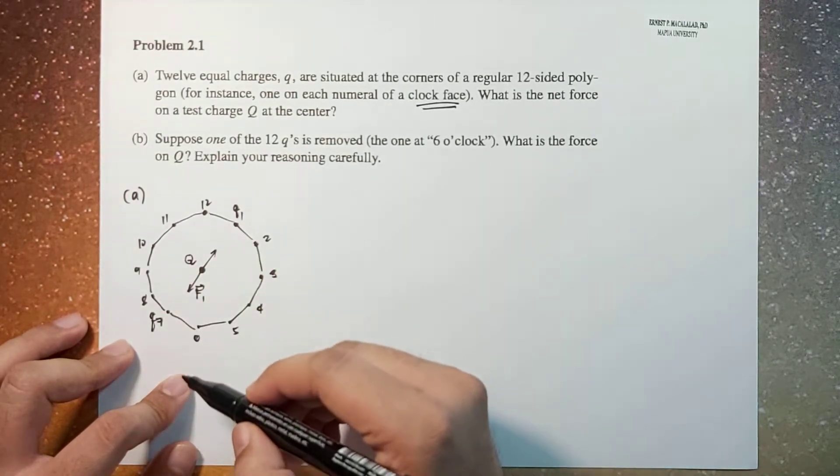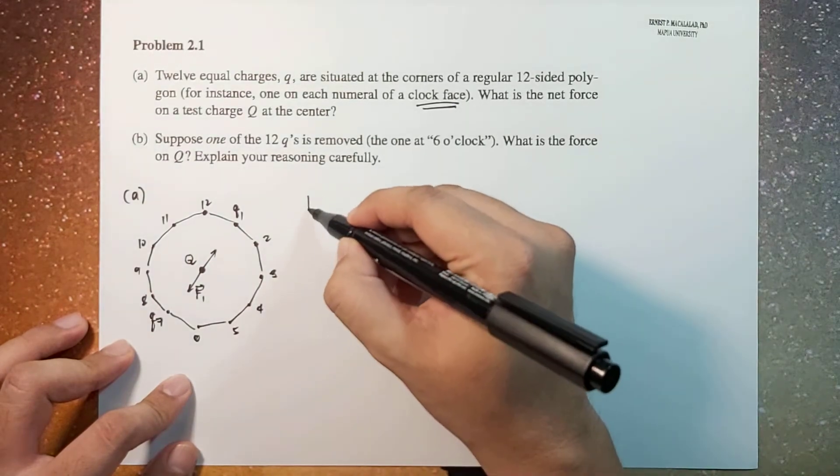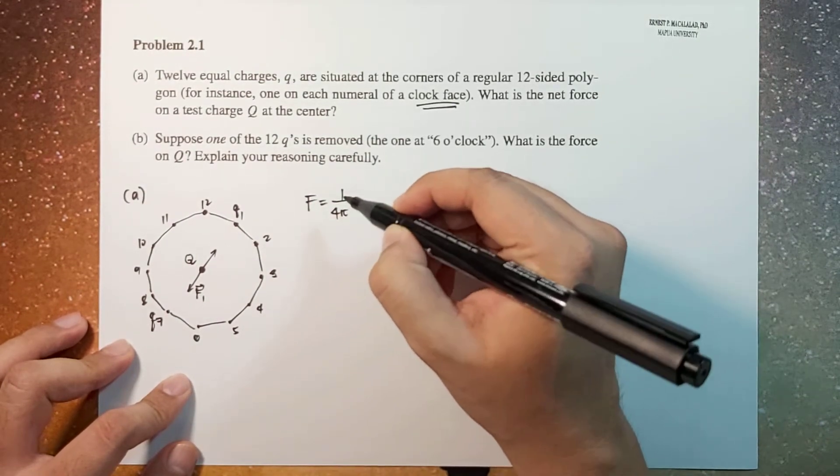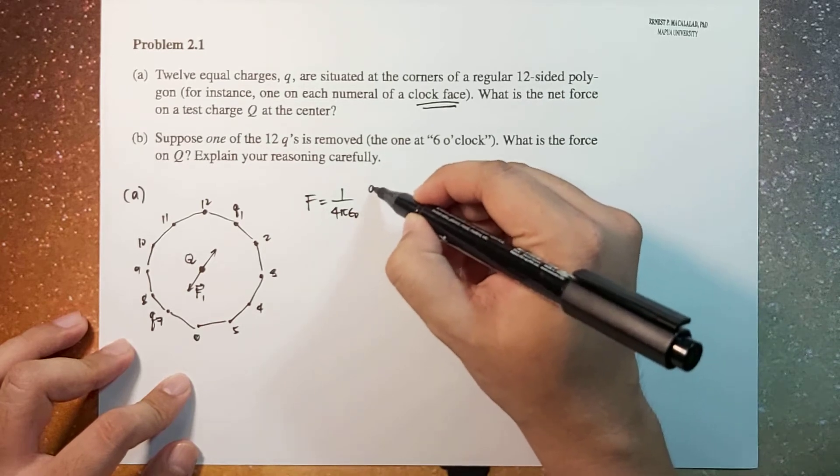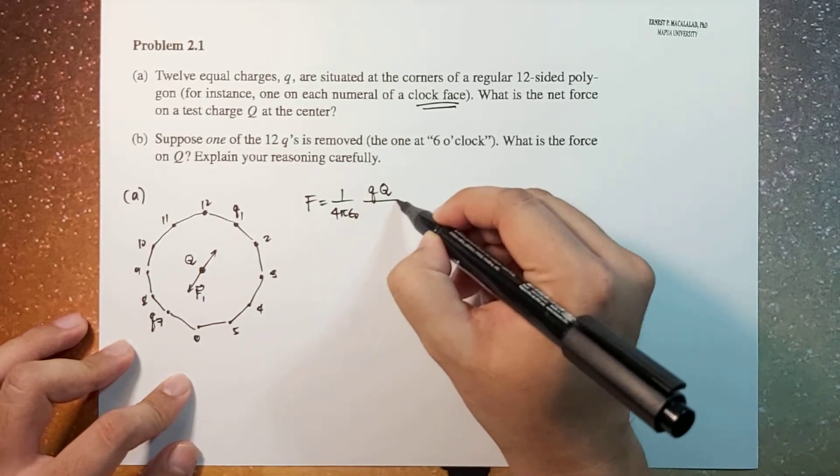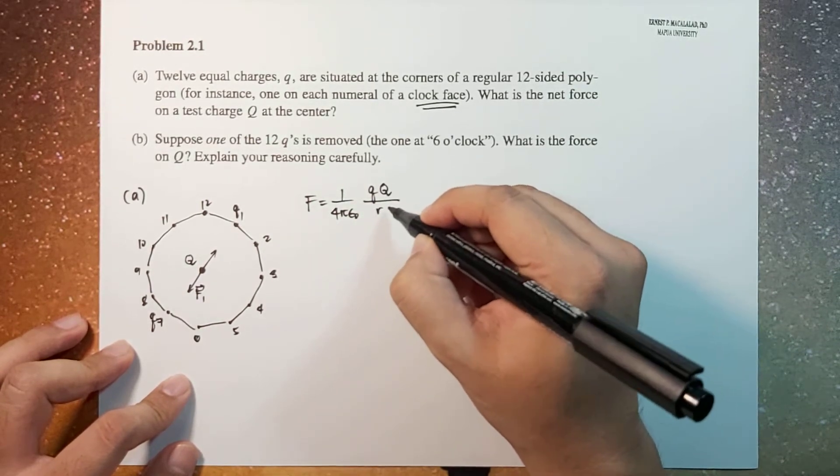Remember that F is equal to 1 over 4π epsilon sub zero times q times capital Q over r squared.